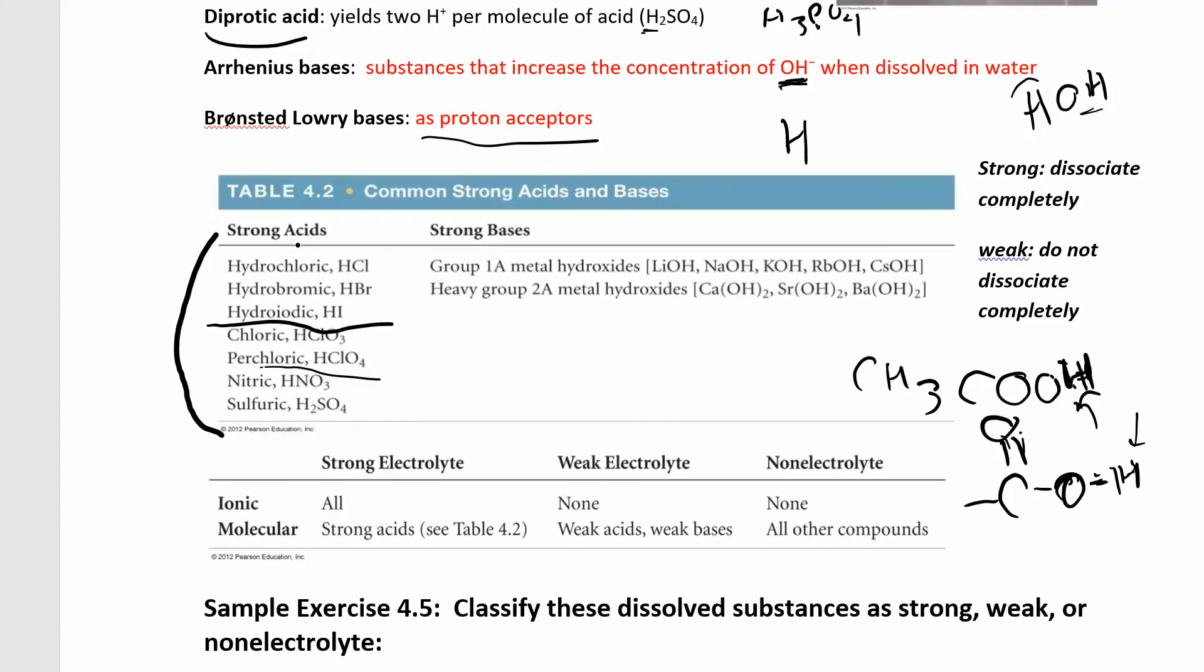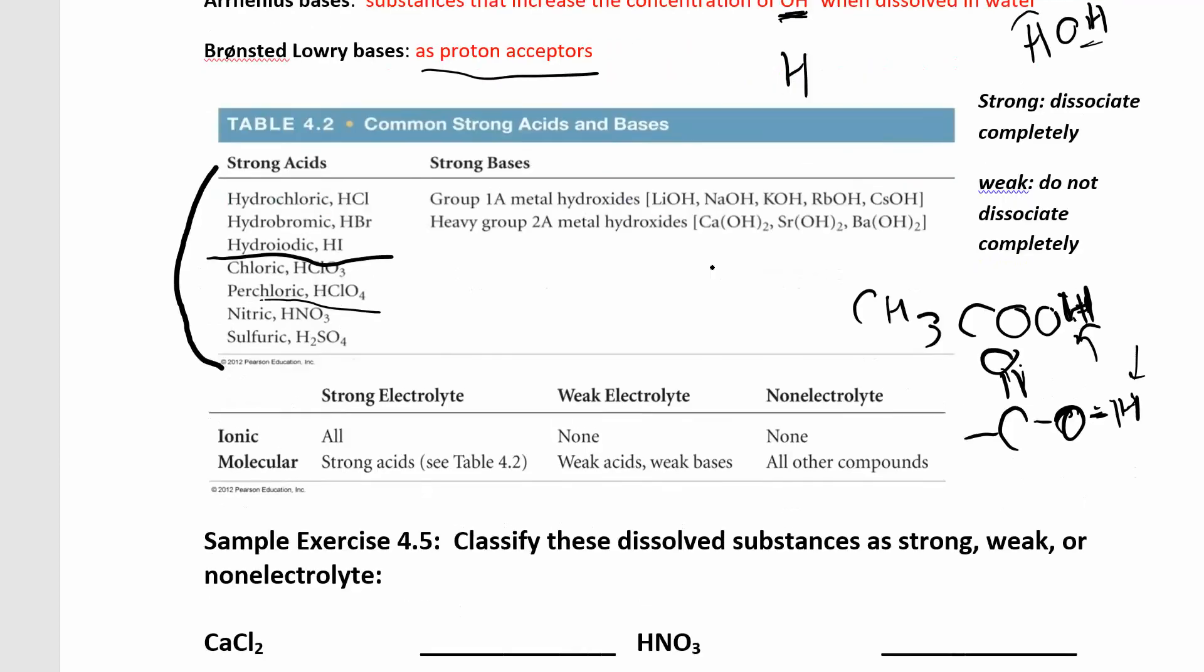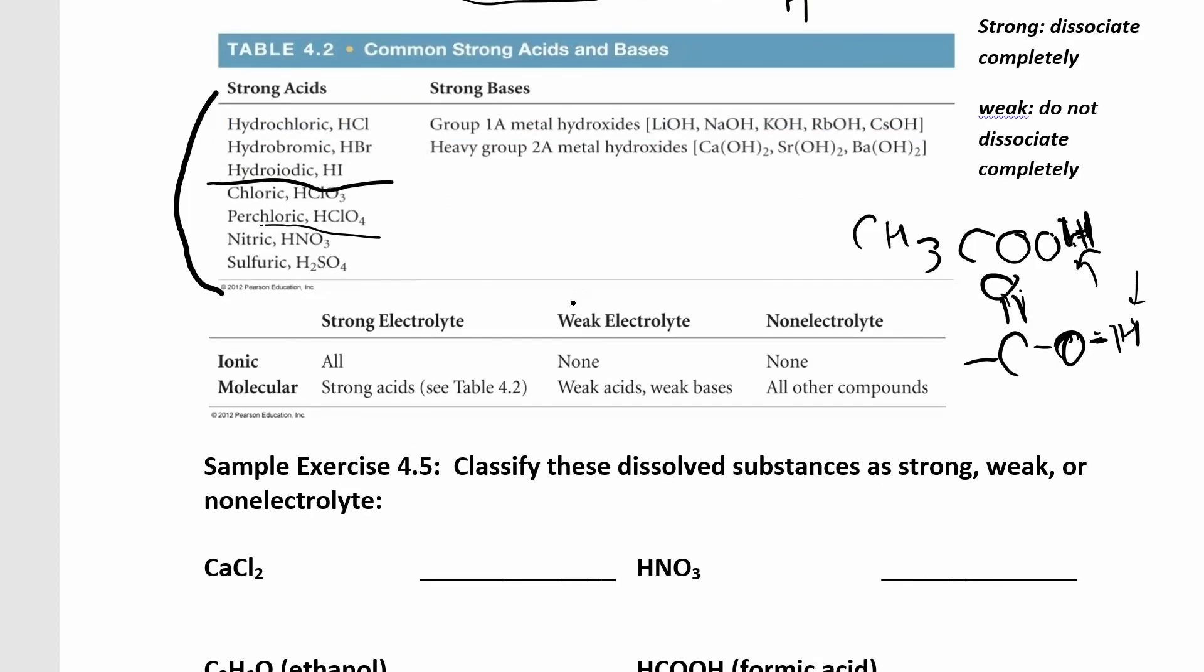So just to summarize, strong acids and strong bases, those are your strong electrolytes. Weak electrolytes are weak acids and weak bases. So if they're not one of these, they're weak. If it's not strong, it's weak. That's how you know if you have a weak acid or base. And anything else is going to be a non-electrolyte.